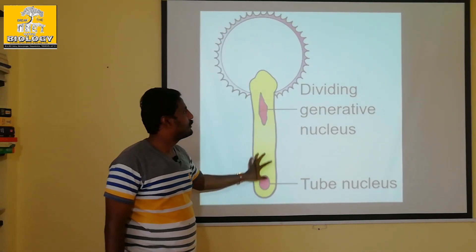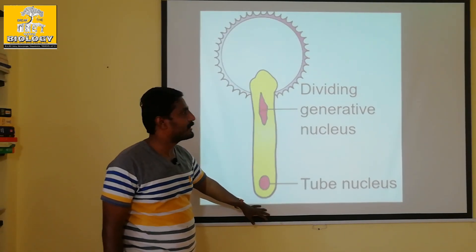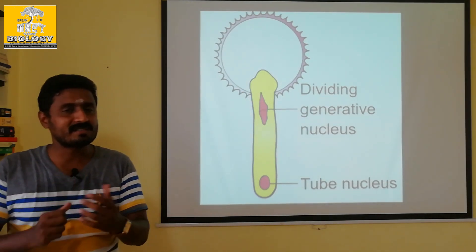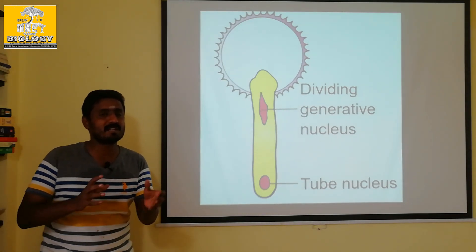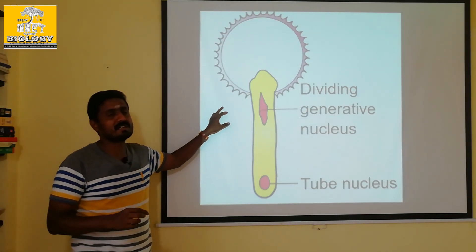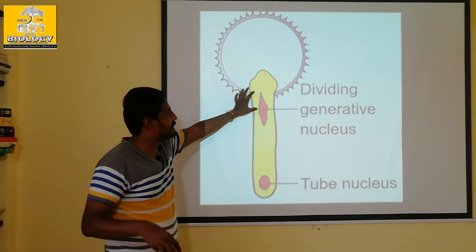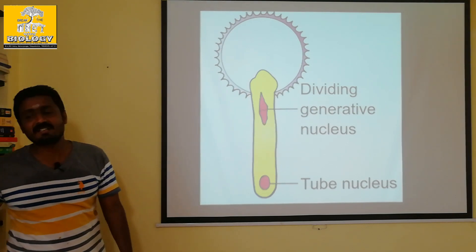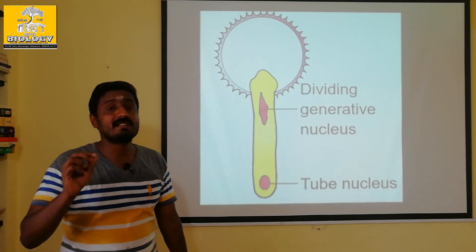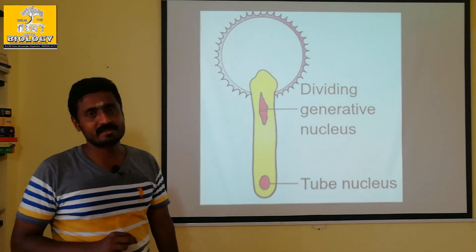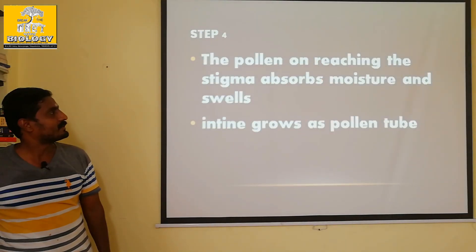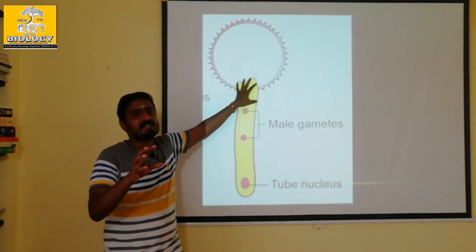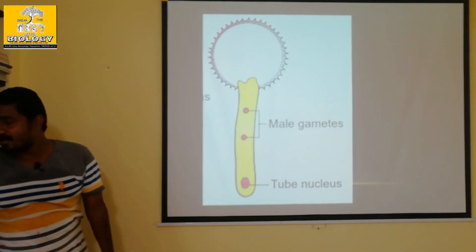The pollen tube will be formed. The pollen tube — tube nucleus — is divided. Stigma. The pollen grains germinate at the germ pore; the tube is formed. The tube nucleus and the generative nucleus are generated. Mitotically, the generative nucleus divides to produce male gametes — two male gametes are produced. After reaching the stigma, before reaching the embryo sac.